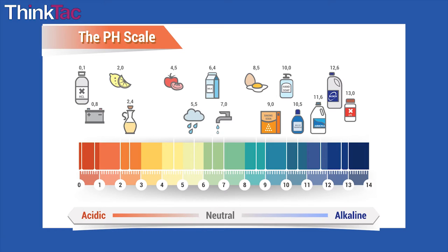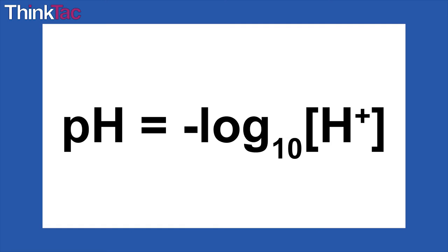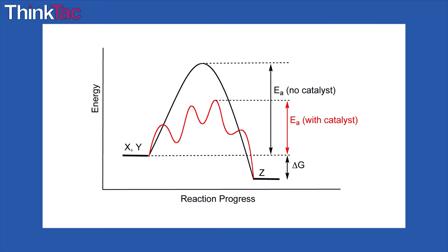Some scientific terms that we've used. pH is a figure expressing the acidity or alkalinity of a solution on a logarithmic scale on which 7 is neutral. Lower values are more acidic and higher values are more alkaline. Mathematically defined as the negative logarithm with base 10 of the hydrogen ion concentration in a solution. A catalyst is a substance that increases the rate of a chemical reaction without undergoing any permanent chemical change itself.